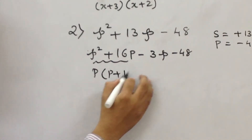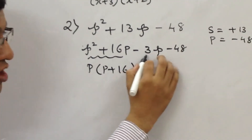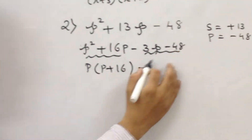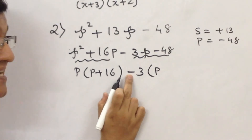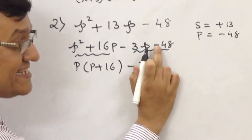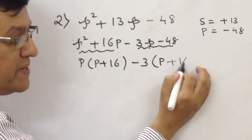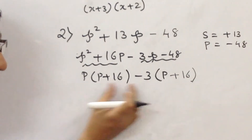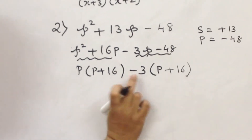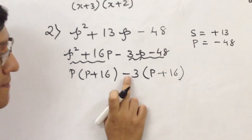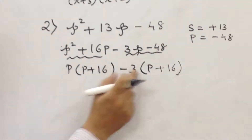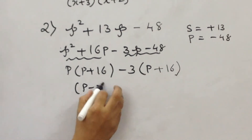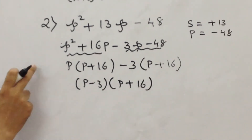Now, absolutely on a parallel line, remove common factors. Take p common: p plus 16. Then, no variable is common in the second pair, but 3 is — take minus 3 common. Since the minus sign is taken outside, the inside sign will change, and I get p plus 16. The first and second bracket should be the same. Verification: minus 3 into p is minus 3p, minus 3 into plus 16 is minus 48. The answer is p minus 3 into p plus 16.